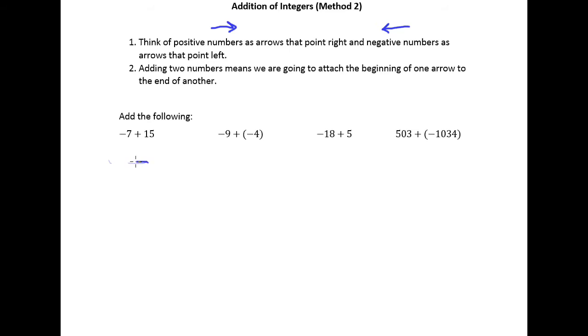When I look at negative seven plus fifteen, I'll make myself just a small number line here and start with negative seven. So if here's zero, I could think of negative seven like this left pointing arrow right here.